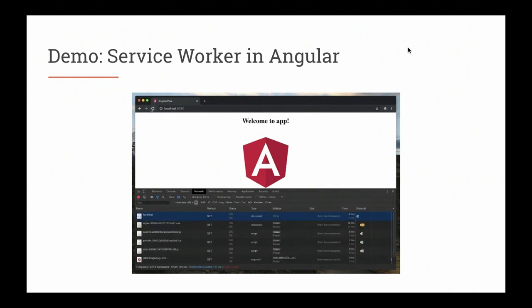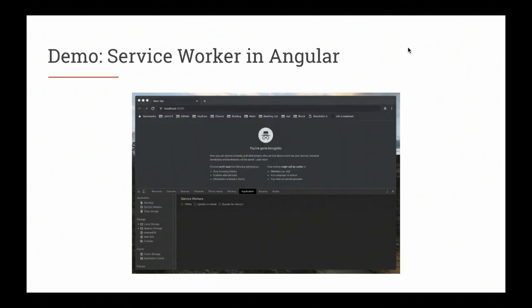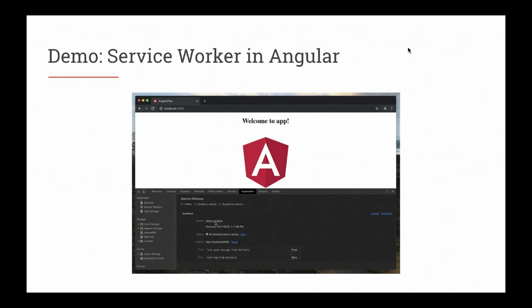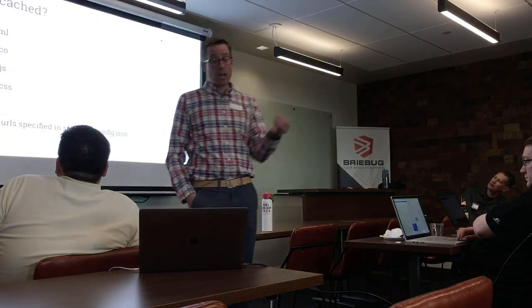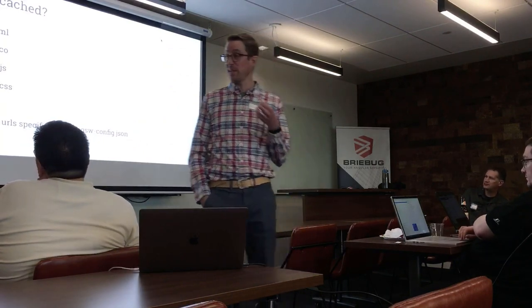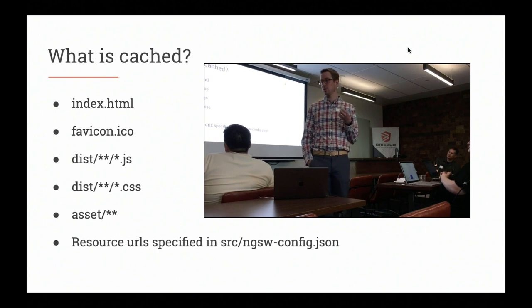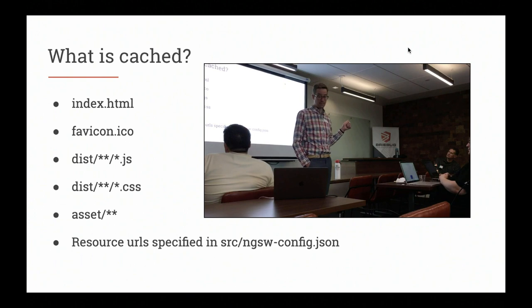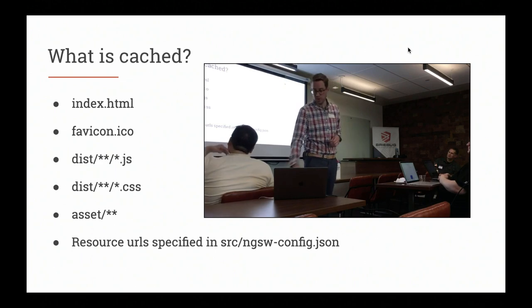Here's a short demo video. I'm online, loading the service worker file, then refreshing — now it comes from the service worker. After going offline and reloading, the app is still loading. Under the Applications tab in Chrome DevTools you can see your service worker installed and debug it. Out of the box when you add PWAs to an Angular app, it caches index.html, the icon, all JS files from the dist directory, all CSS files, and any assets shipped with the application.